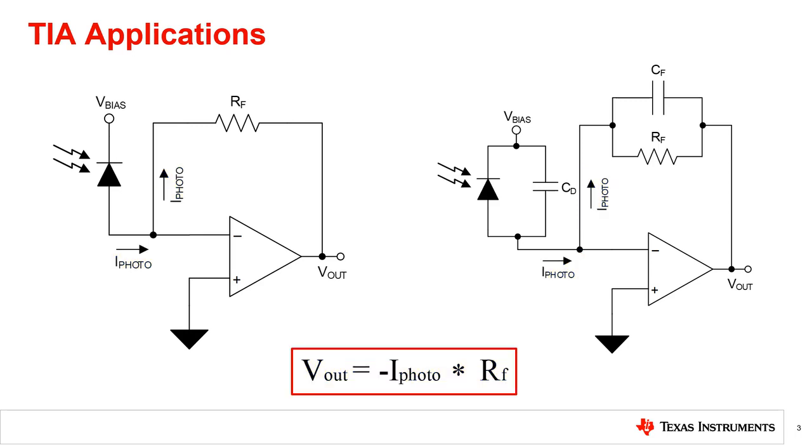As previously mentioned, a photodiode acts as an input current source in most optical applications, which introduces an input capacitance at the inverting input of the amplifier. This will cause instability for most amplifiers. Throughout the rest of the video series, we will discuss the most efficient manner in stabilizing the circuit by compensating the input capacitance with a feedback capacitor.